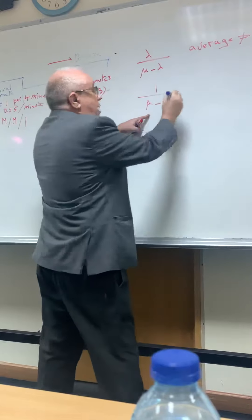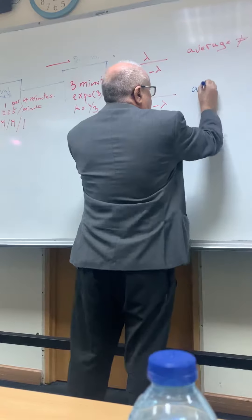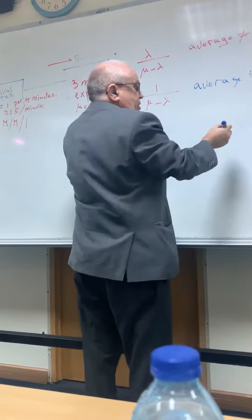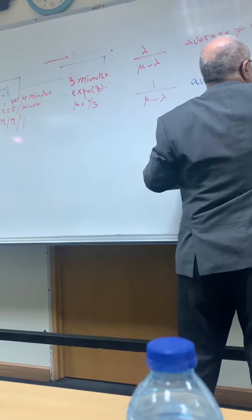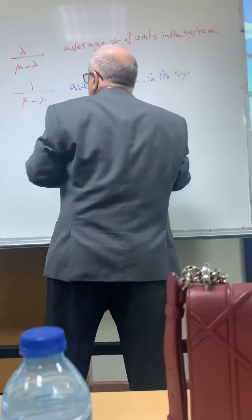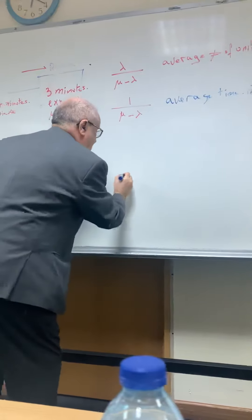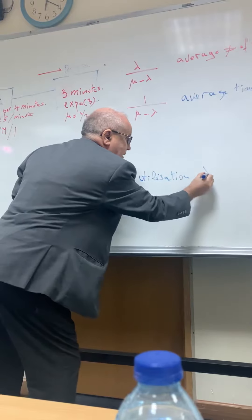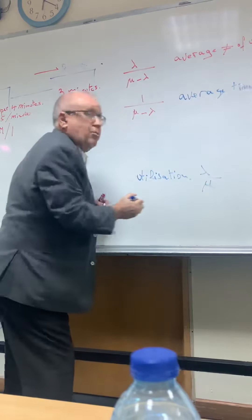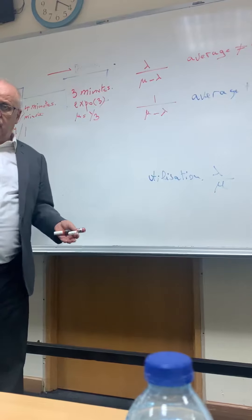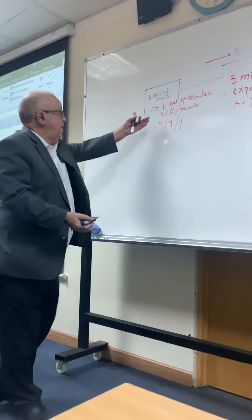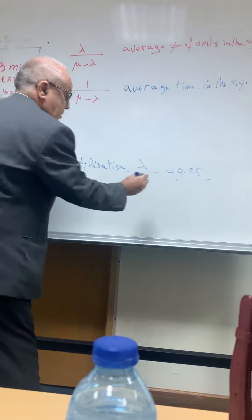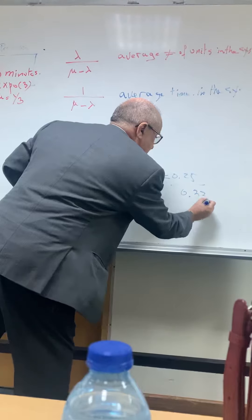So another, what is this? Please help me. What's this? Average time in the system or in the queue? In the system. And another one: what is it? Utilization of the resource, which can be 60 percent, can be 80 percent. In our case, I had mu: 0.5 over 0.33.